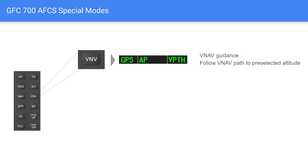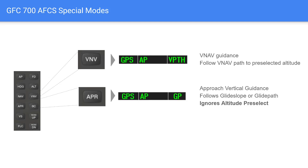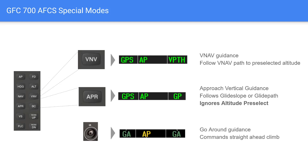Special modes: VNAV follows VNAV guidance to the preselected altitude, stopping at the higher of the preselected altitude or the VNAV altitude. V-path shows in green when active and white when armed. Approach mode couples lateral and vertical for glide slope and glide path guidance, and absolutely ignores altitude preselect. Go-around mode — activated by a button above the throttle — commands a straight-ahead climb, ignoring the CDI and flight plan. It's great for about the first 10 seconds of a missed approach.